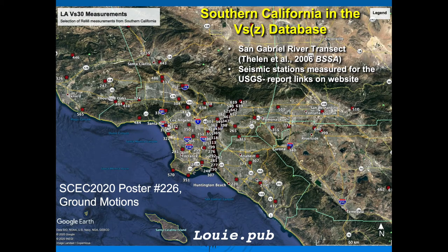This is John Louis from the University of Nevada, Reno. We're announcing a new shear velocity versus depth profile database. There are hundreds of measurements, including in Southern California. You can get the details at poster number 226 in the Ground Motion section.